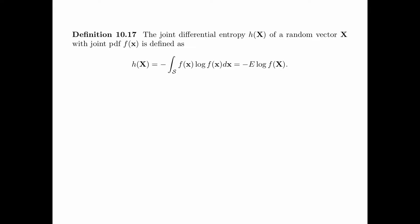Definition 10.17 says that the joint differential entropy H of a random vector x of dimension n, with joint PDF f of x, is defined as minus the integral of f(x) log f(x) dx over the support of f(x). As usual, this can be written as minus the expectation of log of f of the random vector x.